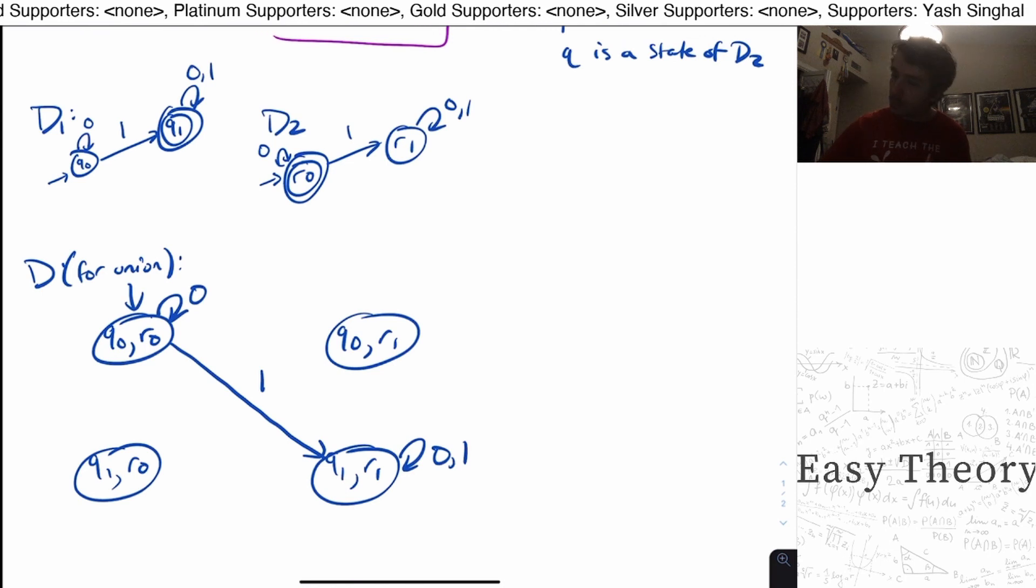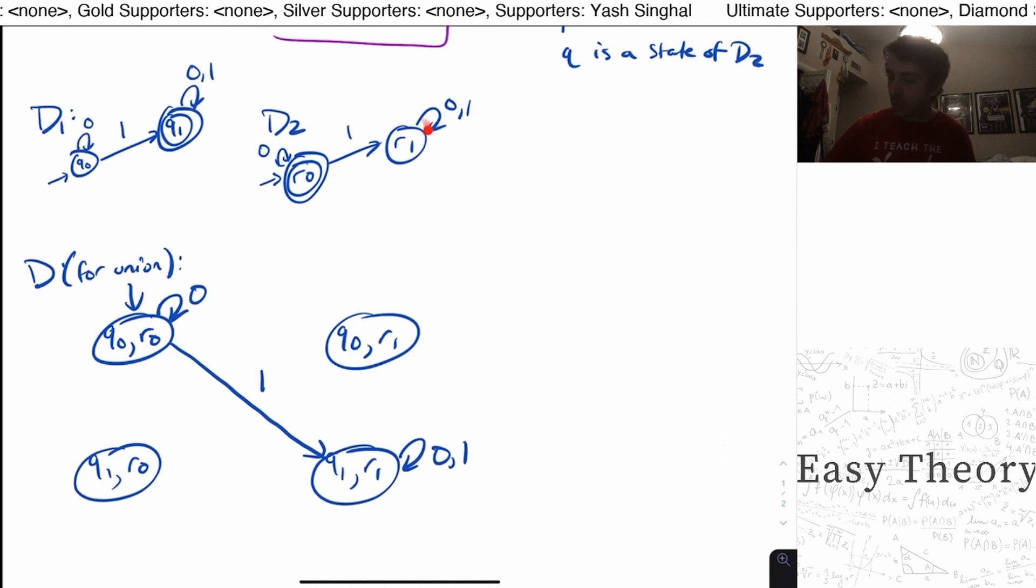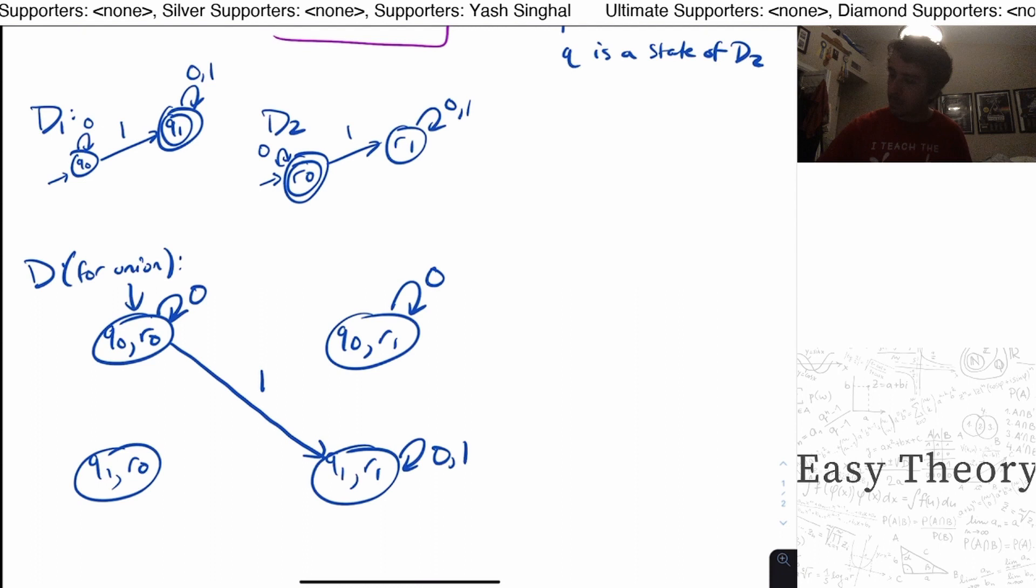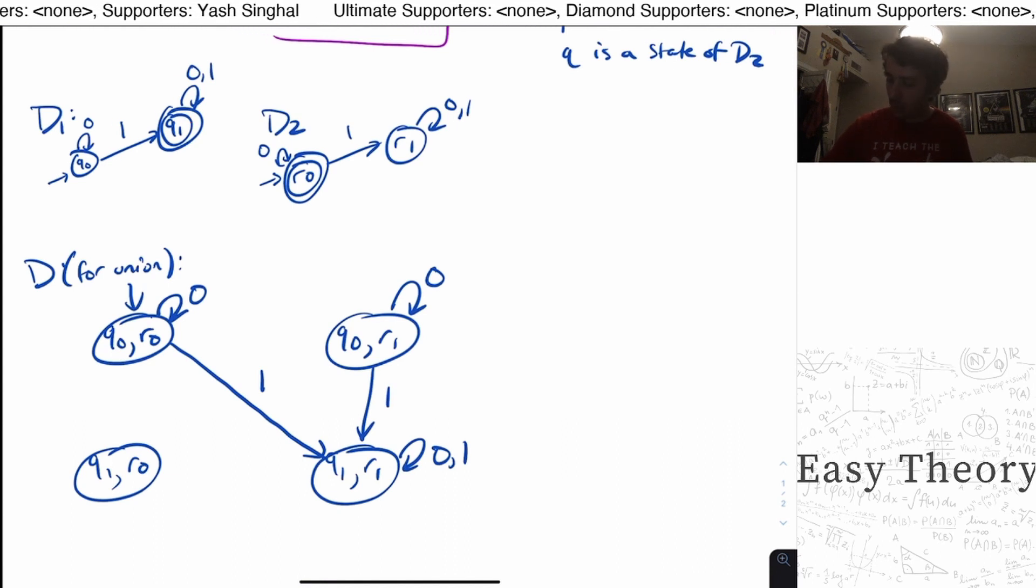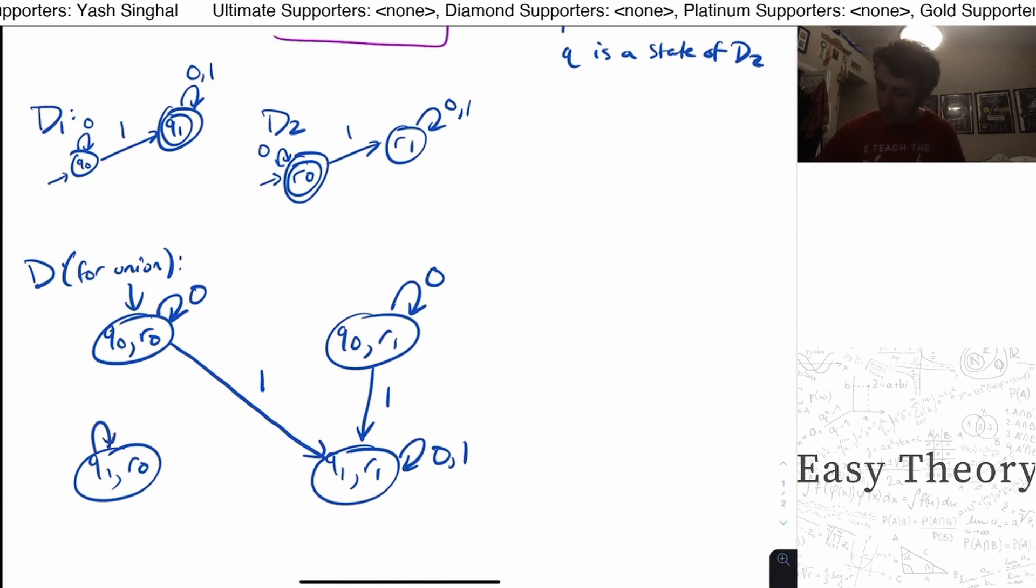Now, what about these other two states over here? Well, let's suppose we're in Q0R1 right here. So then that means on input zero, both states are looping on zero. So that means I'm going to have a self loop on zero here. And on one, it's going to again, go to the Q1R1 state, as we can see, Q0 goes to Q1, R1 will just stay there. And something similar for the other state you can verify for yourself.